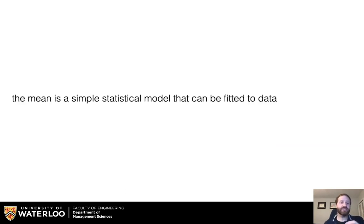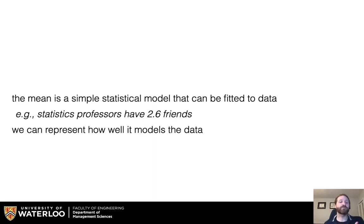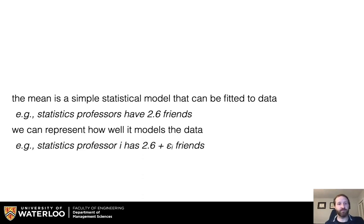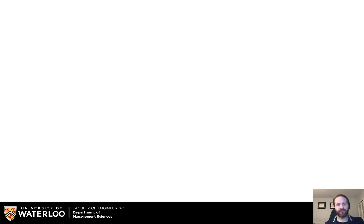The mean is a simple statistical model that can be fitted to data. Statistics professors have 2.6 friends. We can represent how well it models the data — for example, 2.6 plus epsilon_i friends. Make sure you keep this in your head: outcome_i equals the model plus epsilon_i.